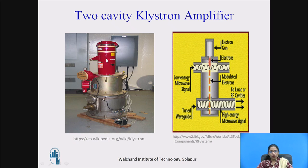This is how the two-cavity Klystron amplifier looks. The amplified output can be taken from here, and a small amount of RF input is given here. The amplified output is obtained at the catcher cavity end, and the small input is provided at the buncher cavity end.